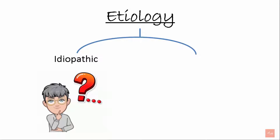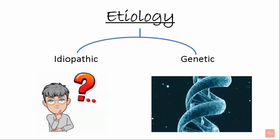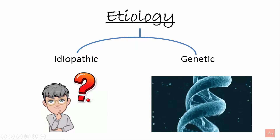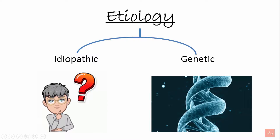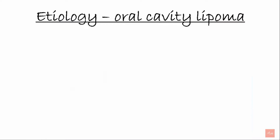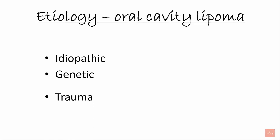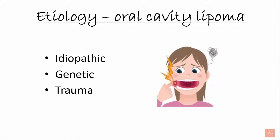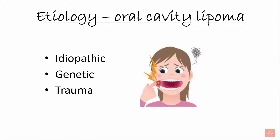The etiology includes idiopathic, where the cause is unknown, and genetic — lipomas can run in families. For oral cavity lipomas specifically, etiology includes idiopathic, genetic, and trauma. Lipomas can occur after traumatic injury, for example, cheek biting.